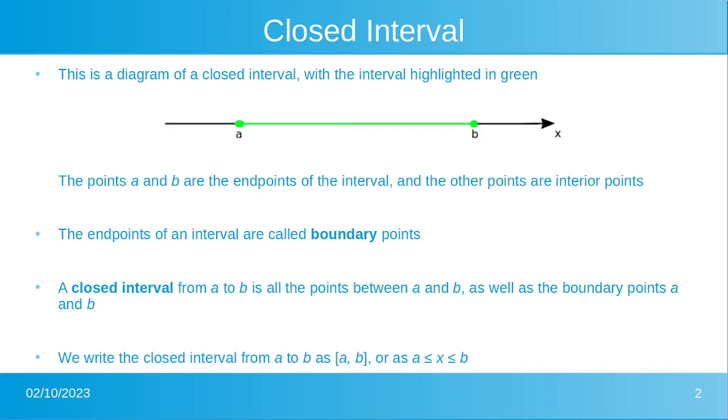In the diagram at the top of the screen, this is a diagram of a closed interval with the interval highlighted in green. The points A and B are the endpoints of the interval and the other points are interior points.